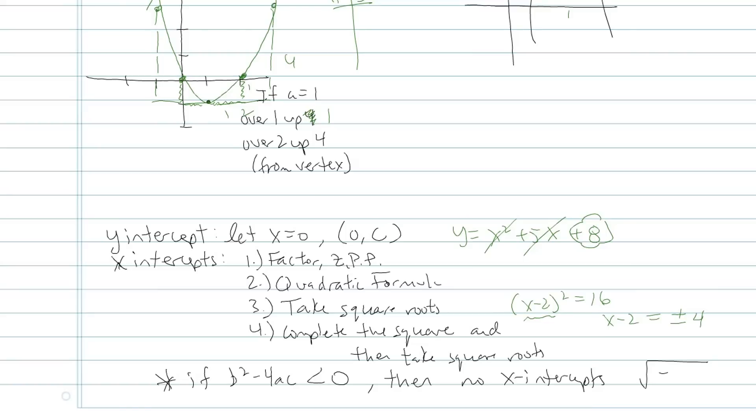Or your fourth option, if your leading coefficient is 1 and your b is even, that's the easiest way to start completing the square. If your a number is 1 and your b value is even, then you could complete the square and then take square root to both sides.